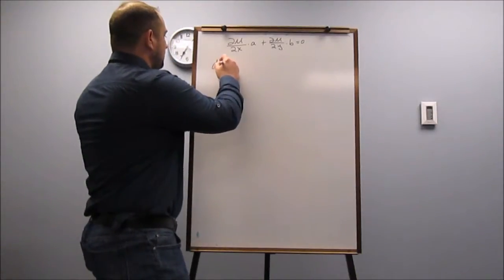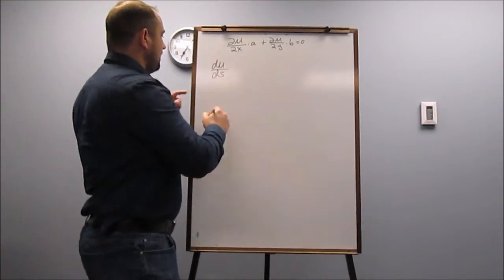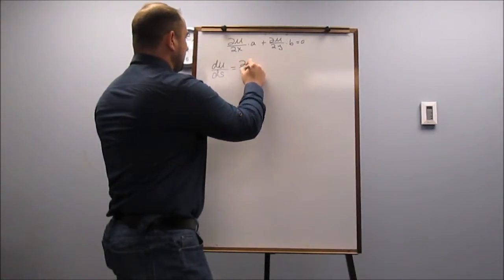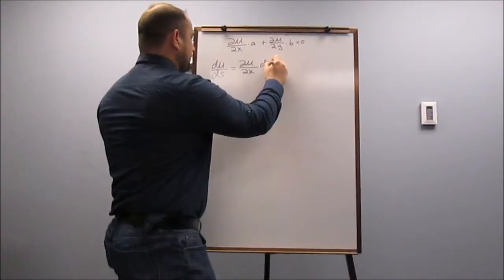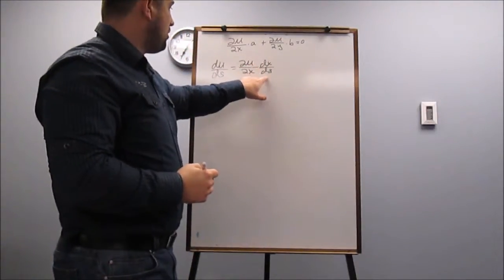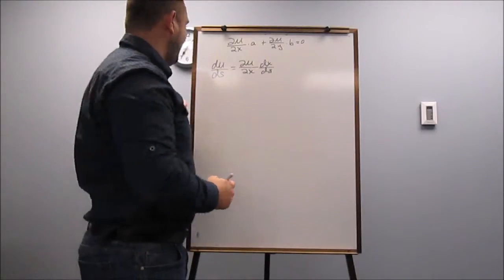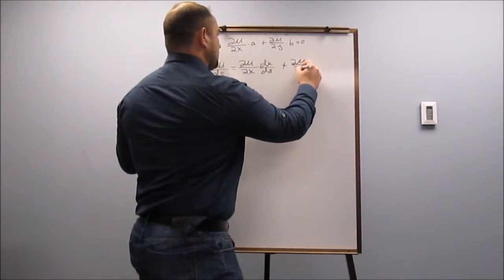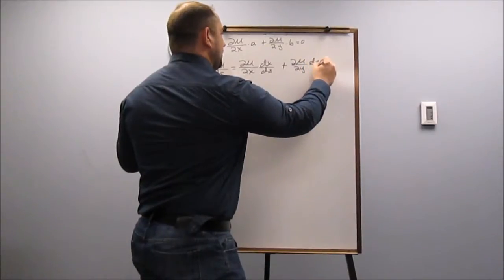So we're going to use S as our different variable. And we know from multivariable calculus that all we have to do is differentiate each variable in U with respect to this new variable S. So partial U over partial X, DX over DS, partial U over partial Y, DY over DS,